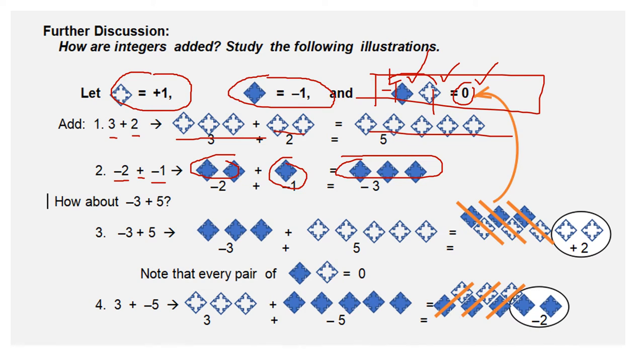But how about if we are adding different signs, such as this example, negative three plus positive five. How are we going to add integers with different signs?